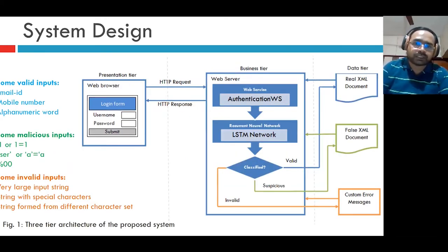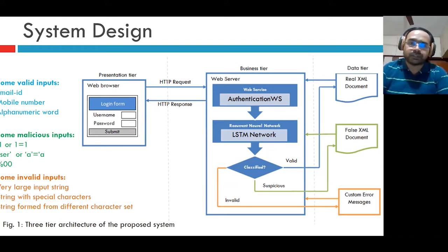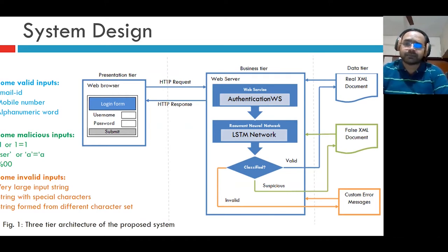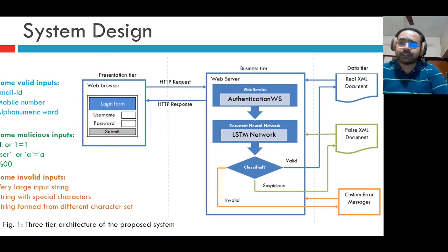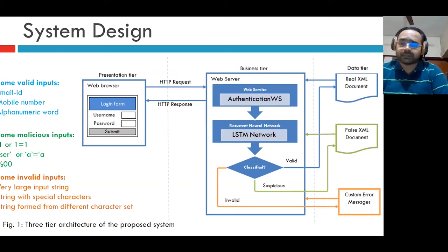Our proposed system design has three tiers: presentation tier, business tier, and data tier. In the presentation tier, the user interface is where the user — or an attacker — enters input. In the business tier, the input is processed. If classified as valid, the real resource is served; otherwise, fake resources are served. In the data tier, there are three types of data: a real XML document, a fake XML document, and custom error messages.